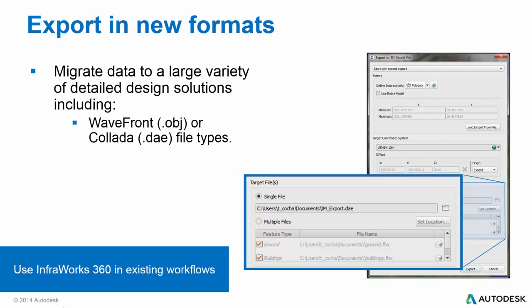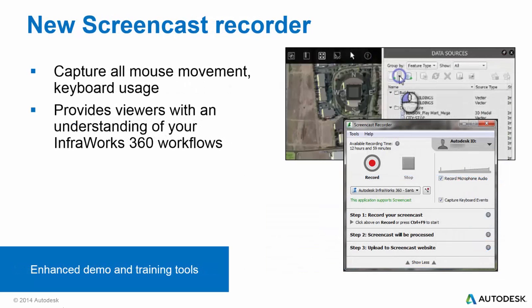Next is the ability to use InfoWorks 360 within your current workflows. You are now able to export data in either Wavefront or Collada file types, enabling you to migrate all preliminary design data created in InfoWorks 360 to a greater variety of detailed design solutions. The newly incorporated screencast functionality offers a new presentation technique best suited for demos, help material, and training. You can now capture all mouse movement and keyboard usage in InfoWorks 360, providing stakeholders a better understanding of your workflows.